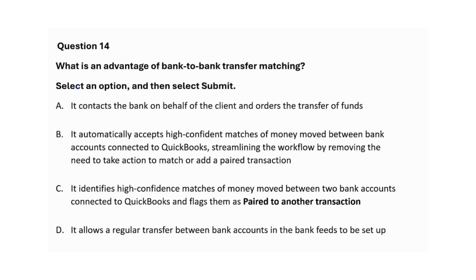Exam question: What is an advantage of bank-to-bank transfer matching? A: It contacts the bank on behalf of the client and orders the transfer of funds. B: It automatically accepts high-confidence matches of money moved between bank accounts connected to QuickBooks, streamlining the workflow by removing the need to take action to match or add a paired transaction. C: It identifies high-confidence matches of money moved between two bank accounts connected to QuickBooks and flags them as paired to another transaction. D: It allows a regular transfer between bank accounts in the bank feeds to be set up. The correct answer is C.